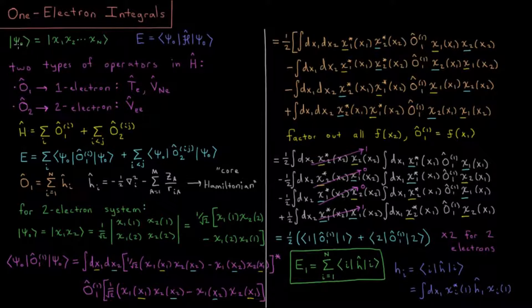That wave function is going to be some ground state determinant of a set of spin orbitals, indicated from χ₁ all the way to χₙ. And the energy of this wave function is going to be the expectation value of the Hamiltonian operator.